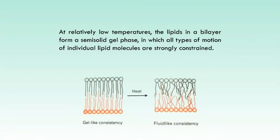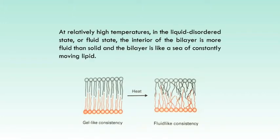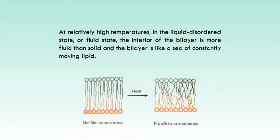Although the lipid bilayer structure is quite stable, its individual phospholipid and sterol molecules have some freedom of motion. The structure and flexibility of the lipid bilayer depend on temperature and on the kinds of lipids present. At relatively low temperatures, the lipids in a bilayer form a semi-solid gel phase, in which all types of motions of individual lipid molecules are strongly constrained. At relatively high temperatures, in the liquid disordered state or fluid state, the interior of the bilayer is more fluid than solid and the bilayer is like a sea of constantly moving lipid.